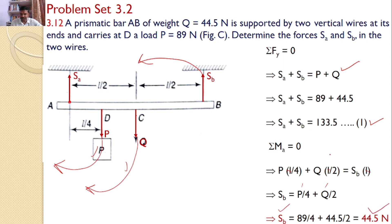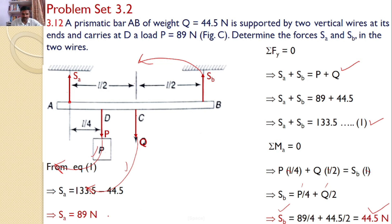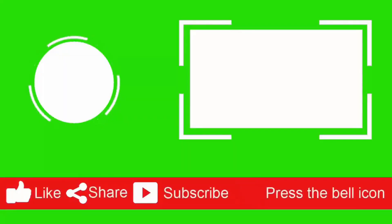By substituting SB into equation one, SA equals 133.5 minus 44.5, which equals 89 N. So SA equals 89 N and SB equals 44.5 N are the answers for the given problem.